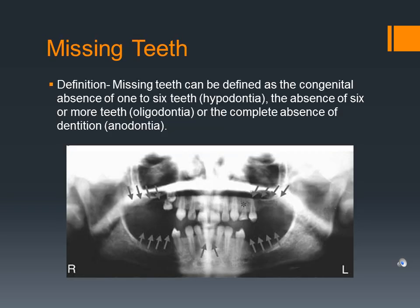Missing teeth can be defined as a congenital absence of one to six teeth, which is hypodontia; the absence of six or more teeth, which is oligodontia; or the complete absence of dentition, which is anodontia.